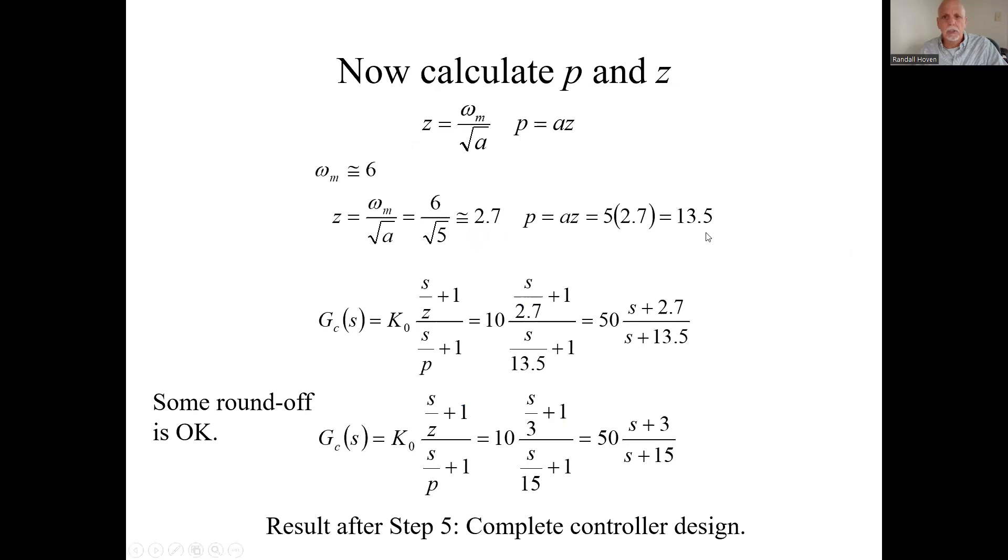z is a 2.7, the p is a 13.5. Put that in there, simplify it, and here is our lead controller. This is maybe too precise. It would be okay to round off a little bit, 3 and 15. You still want the 15 to be a factor of five greater than three if a needs to hold. This would be okay as well as this.